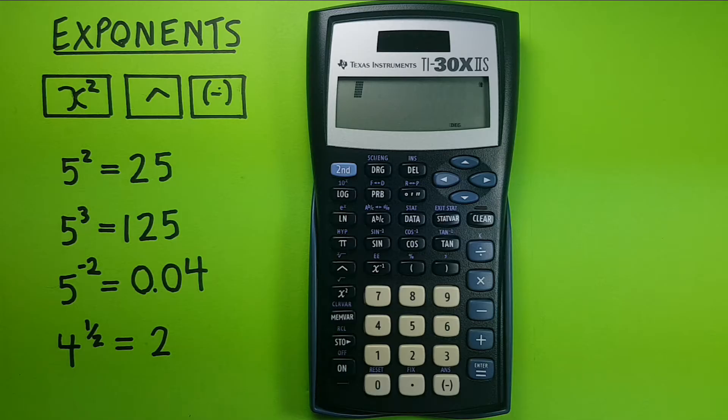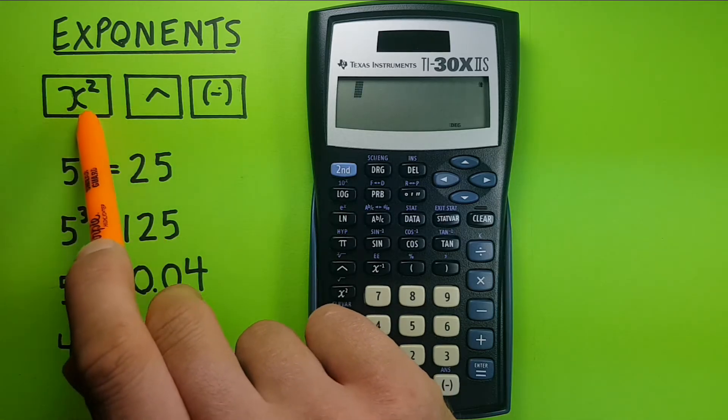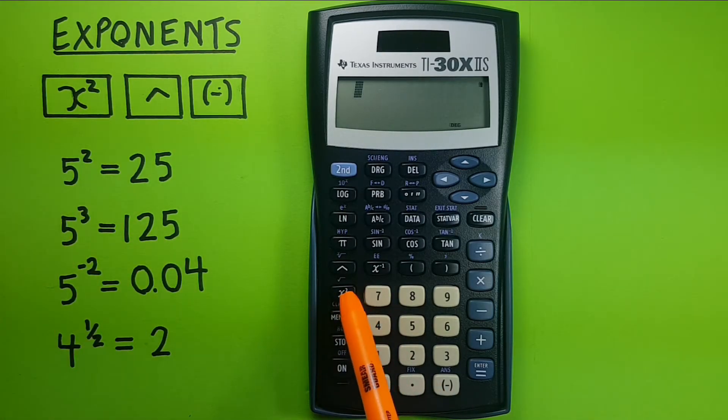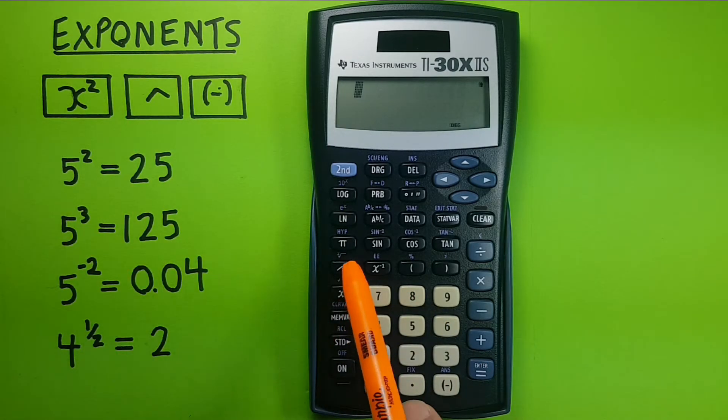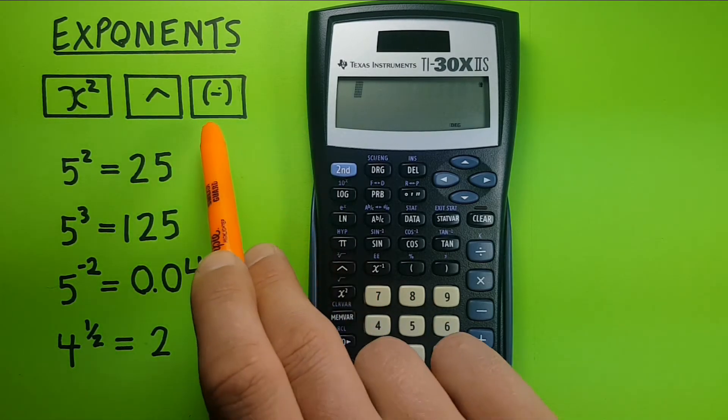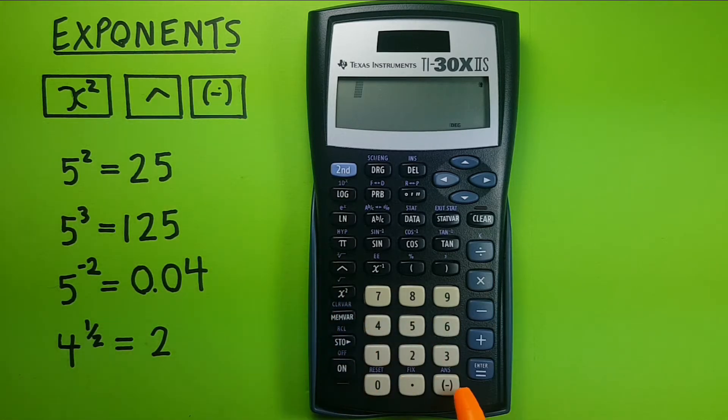To do this we'll be using the following keys: the x squared key located here, the up arrow key or the caret key located here, and the negative key located here in case we want to do a negative exponent.